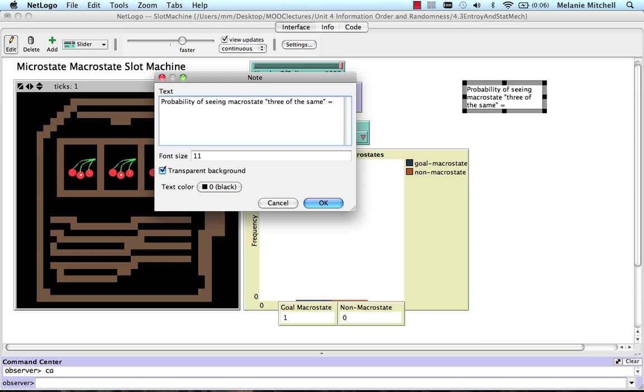that is cherry, cherry, cherry, lemon, lemon, lemon, et cetera. And there were 125 possible microstates, so that probability is going to be equal to five divided by 125.